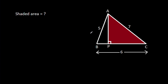In this video, we have been given that AB is 5, BC is 6, AC is 7, and AP is perpendicular on BC. Then we have to find the shaded area.